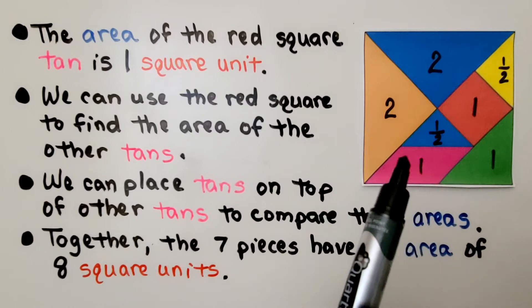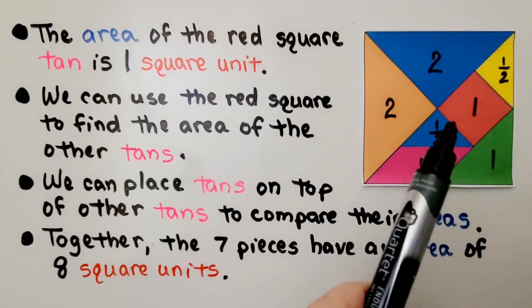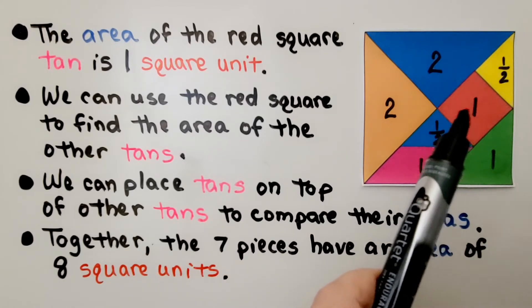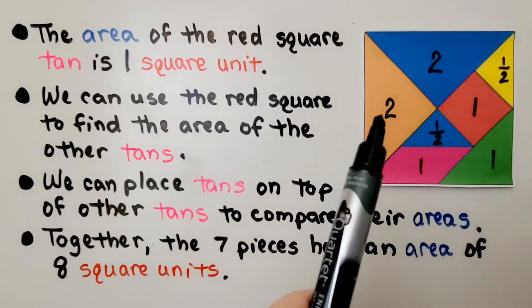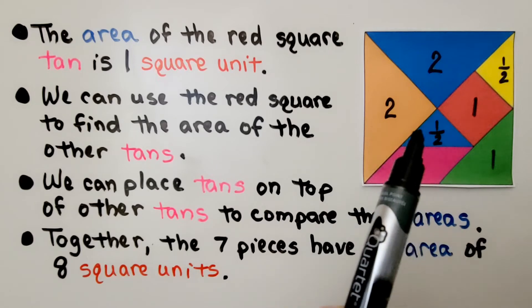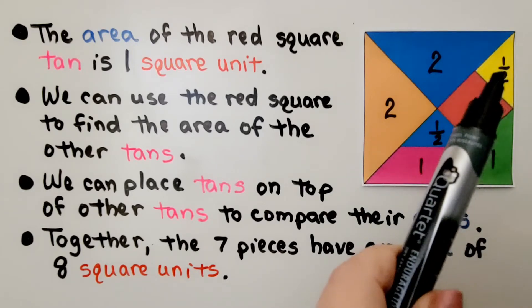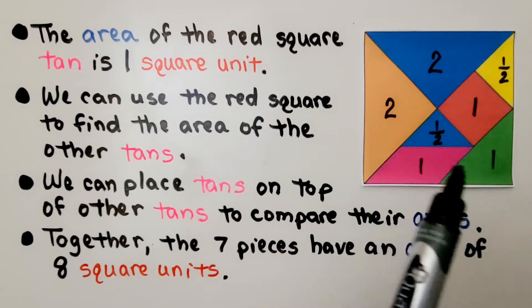I have the tans numbered by their area. The red square tan is one square unit. That means that's two units of area, and that's two units of area. That's a half unit of area, and that's a half unit of area. These are one unit of area.